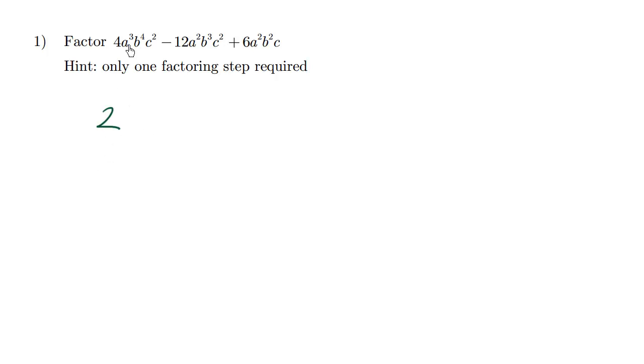Now look at the first variable. Here we're dealing with A. If it was XYZ, we'd be dealing with X. Let's look at the A's. What's the lowest index? We have a 3 here, a 2 here, and a 2 here. It's going to be A squared. That's the lowest index. This is the GCF.